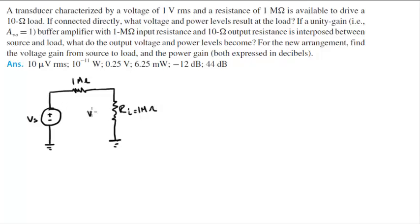And this will be VI plus minus, and on this side plus minus we have AVO times VI. But they're telling you it's a unity gain, so AVO is going to come out to be 1.